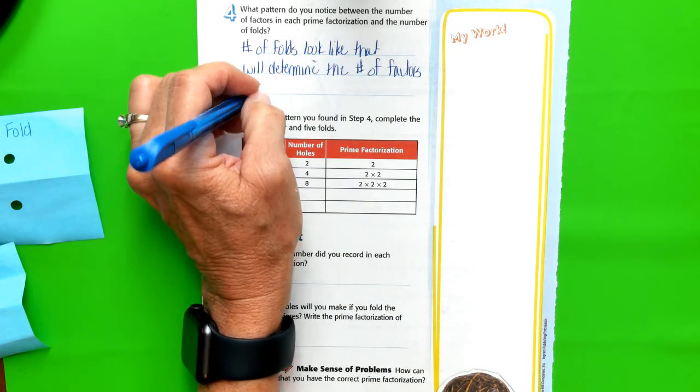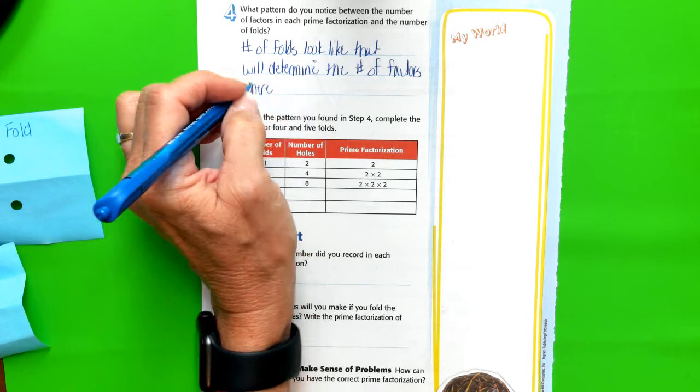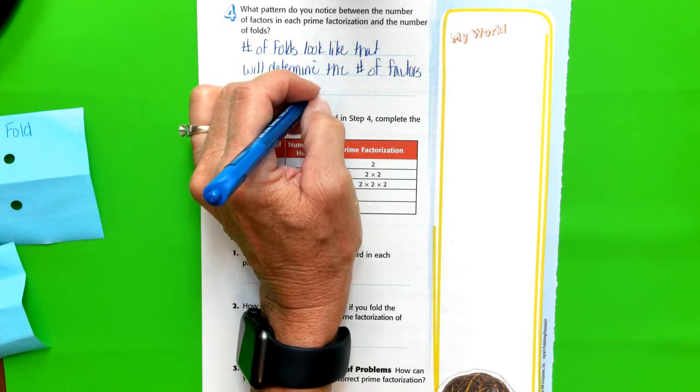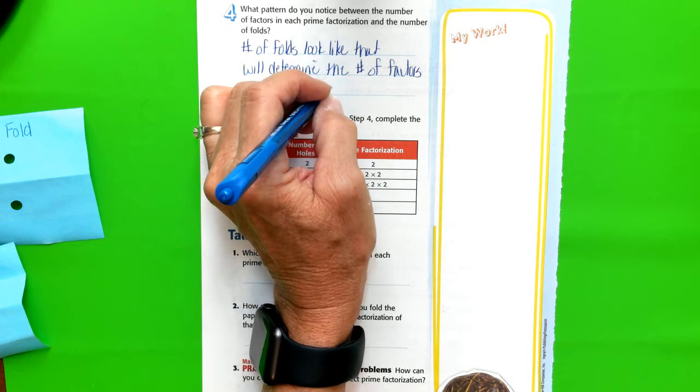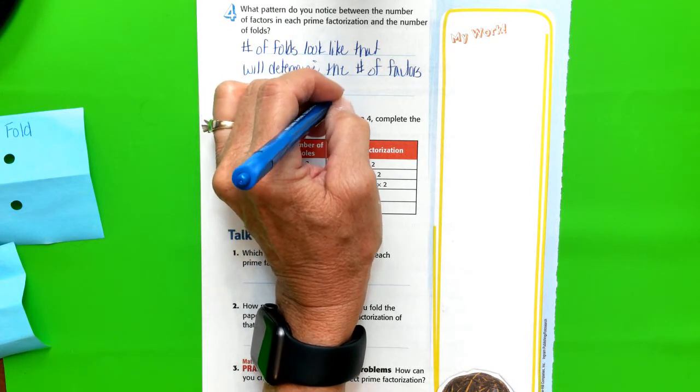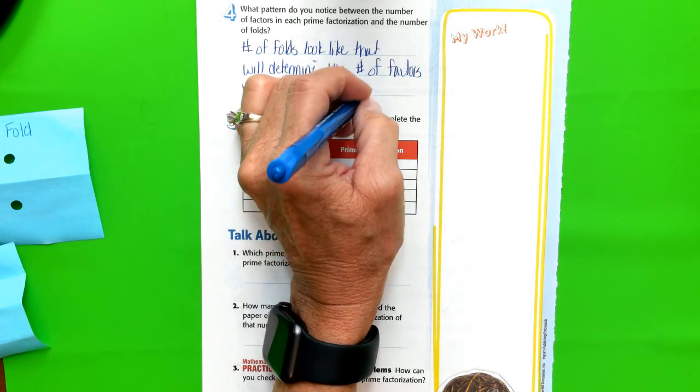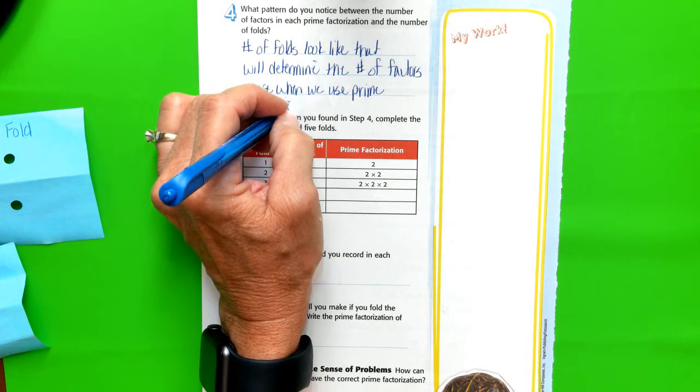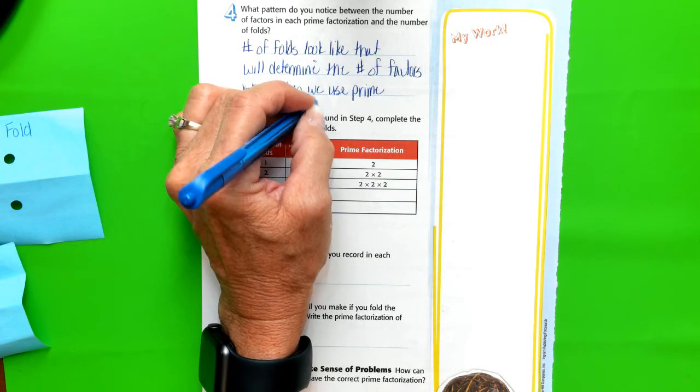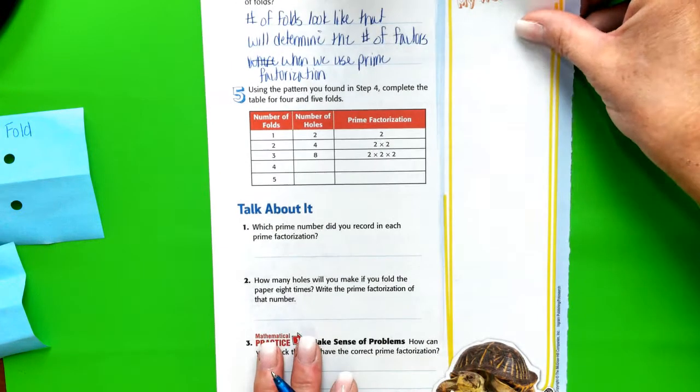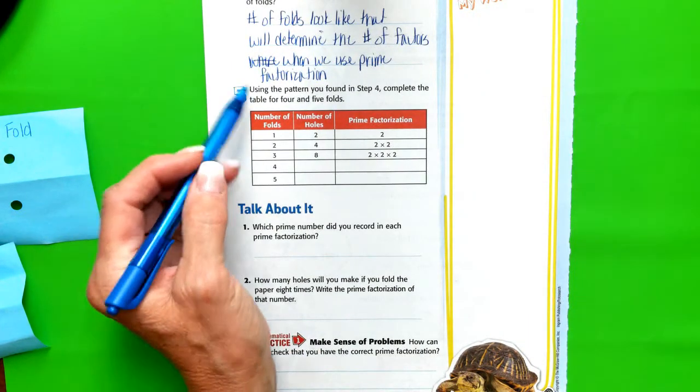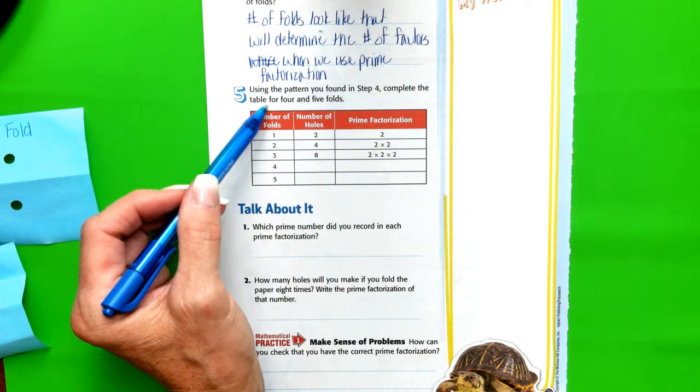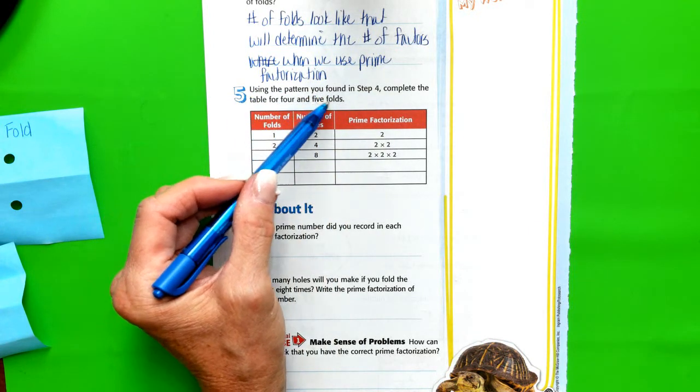So we might write something like the number of folds looks like that will determine the number of factors when we use prime factorization. So if that's the case, then let's use the pattern that we've discovered in step four and complete the table for four and five folds.